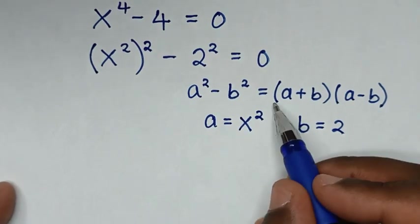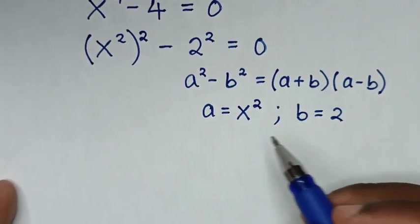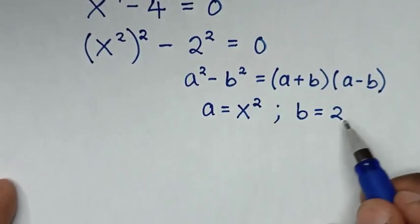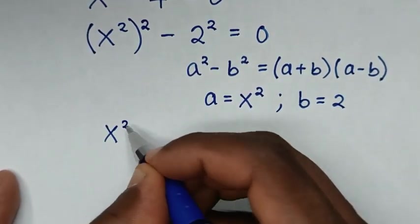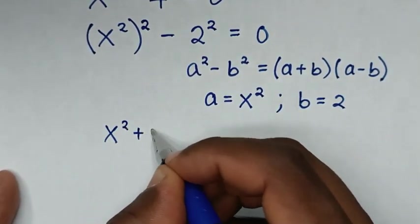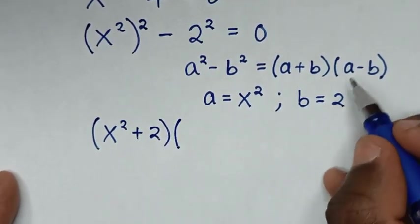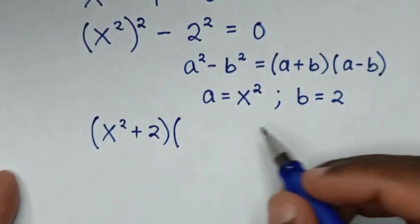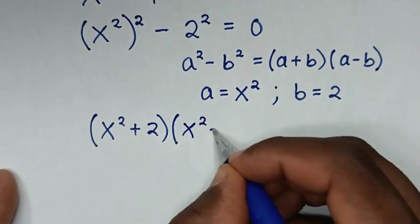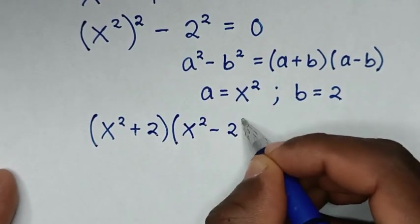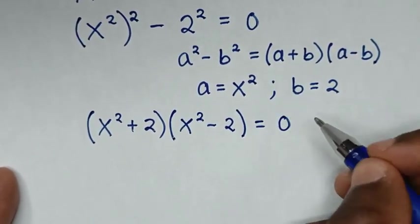Then we will apply this form. So it will be (x² + 2)(x² − 2) is equal to 0.